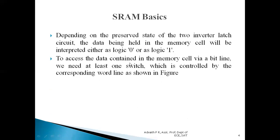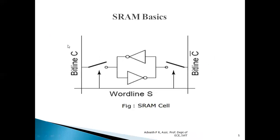To access the data contained in the memory cell, we use something called a bit line. We will need at least one switch controlled by the corresponding word line. For SRAM, the memory element — the storage of data — is done by means of a latch, or two inverters cascaded in parallel. We use two switches on either side of the inverters; those switches are controlled by the word line, and the other terminal of the switches is connected to the bit line. This is a single-bit static RAM cell.